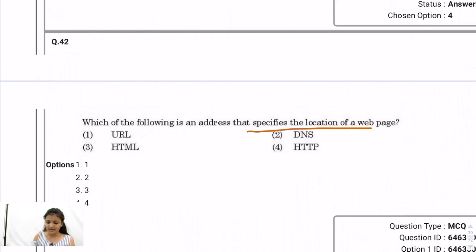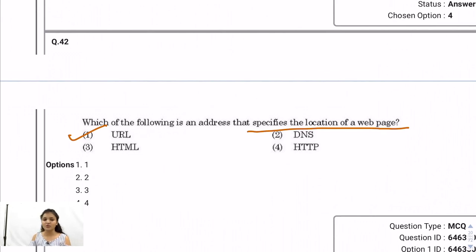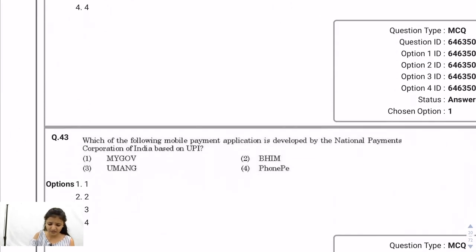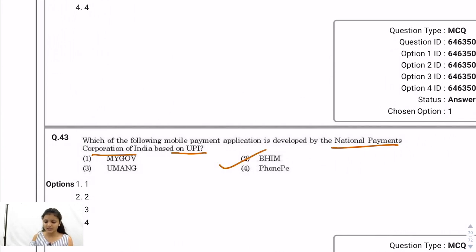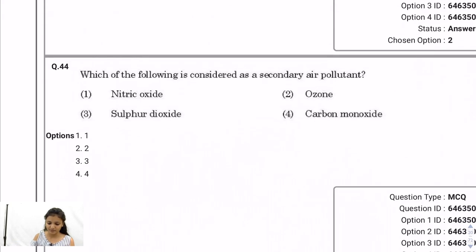Question 42: Which is an address that specifies the location of a webpage? That is URL — Uniform Resource Locator. Question 43: Which mobile payment application was developed by the National Payment Corporation of India based on UPI? That is BHIM, launched on 30th December 2016 by the Government of India. It is UPI-based.